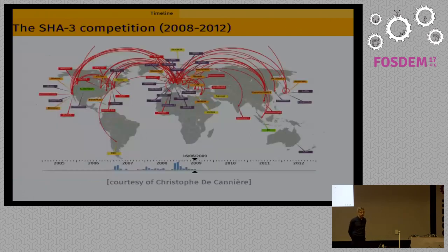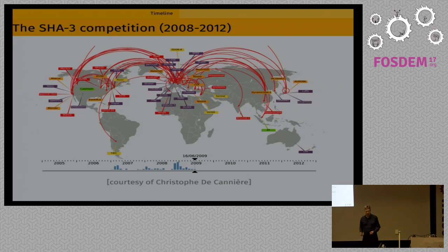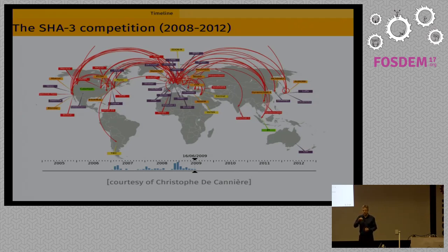Between 2008 and 2012, there was a SHA-3 competition. It was an open competition in the sense that every design was public — every team was required to give the rationale of the design and provide an open source implementation. Every team was allowed to try to break and attack any competing design. There was also effort to evaluate the performance of all these designs, involving a lot of the cryptographic community from different companies and universities.